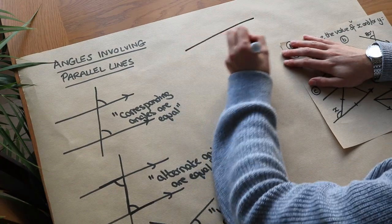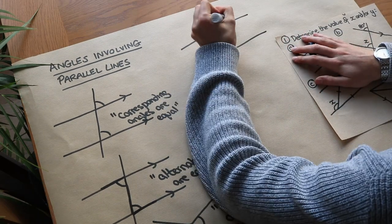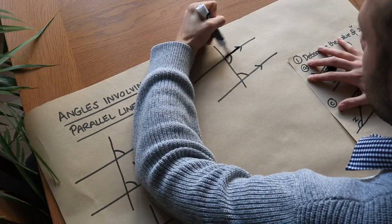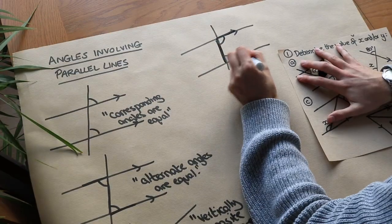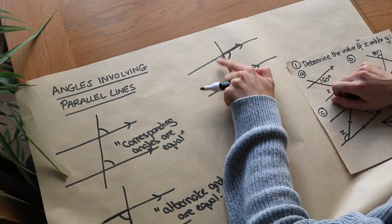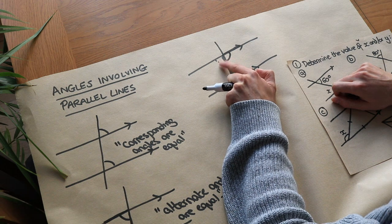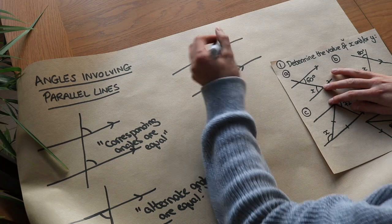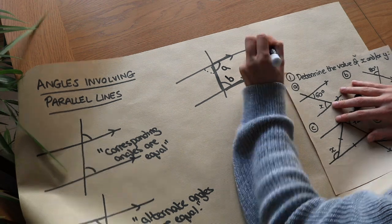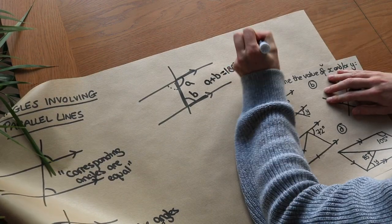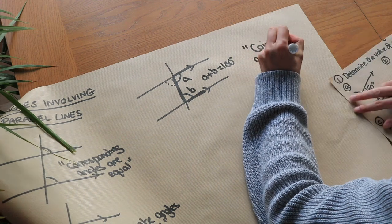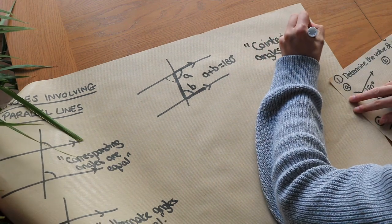There is one final type of angle pair. With parallel lines connected by a line, these two angles are not equal to each other but form a C shape — sometimes called C angles. Using alternate angles and the fact that angles on a straight line sum to 180 degrees, we can show that A plus B equals 180 degrees. These are called co-interior angles, and they sum to 180 degrees.